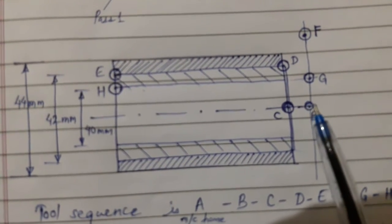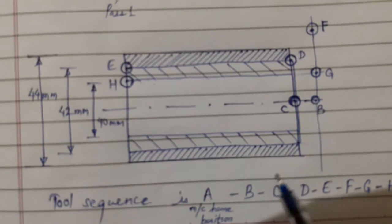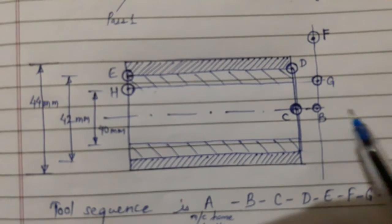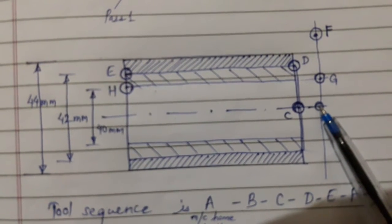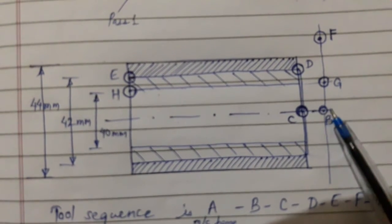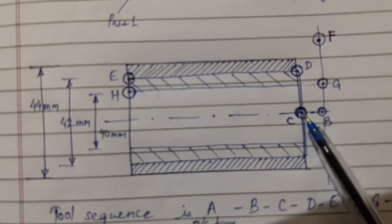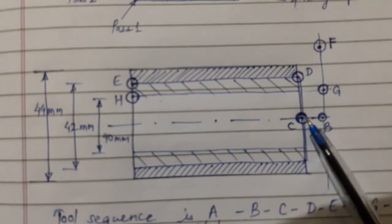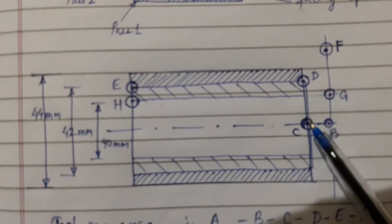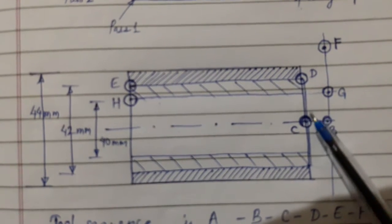Let us work out the tool sequence. First, we will get the tool from its machine home position, which we will call position A. Then we will reach near the job but position the tool 2 mm away from the face. Next, we will bring the tool to the face and perform the facing operation, moving the tool from center to D.